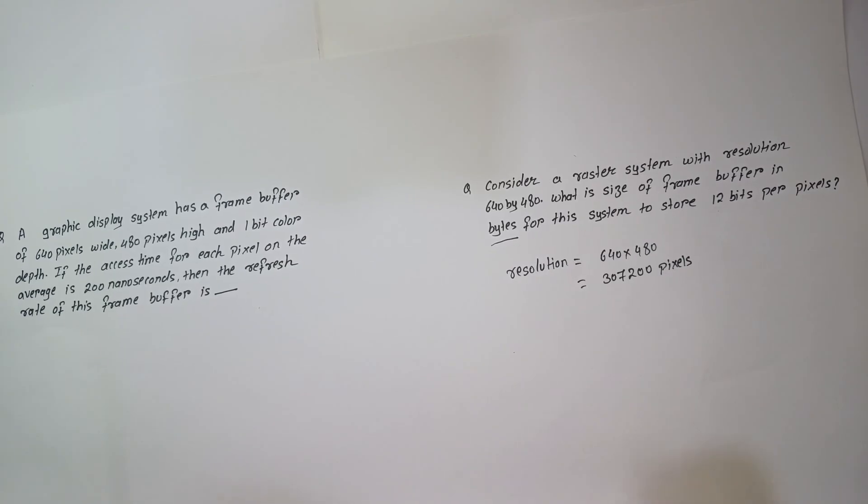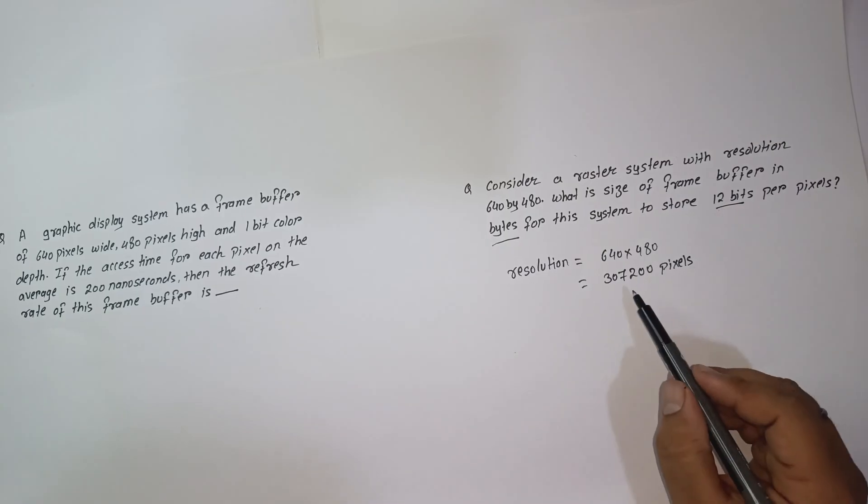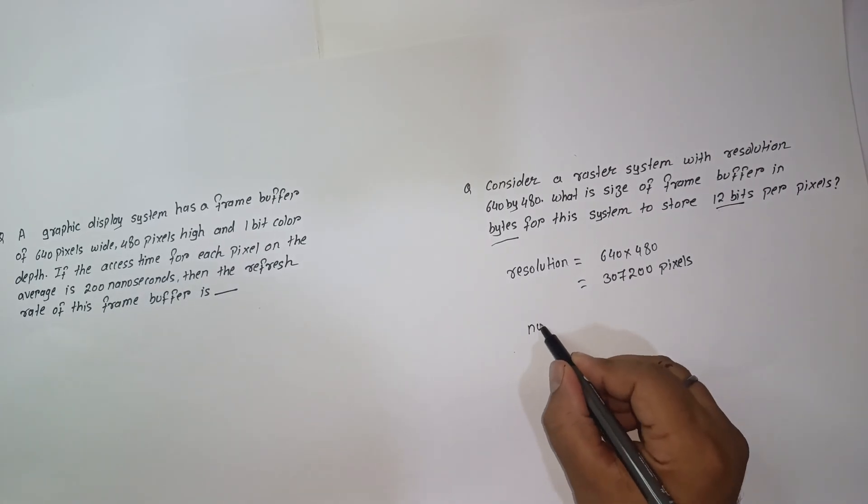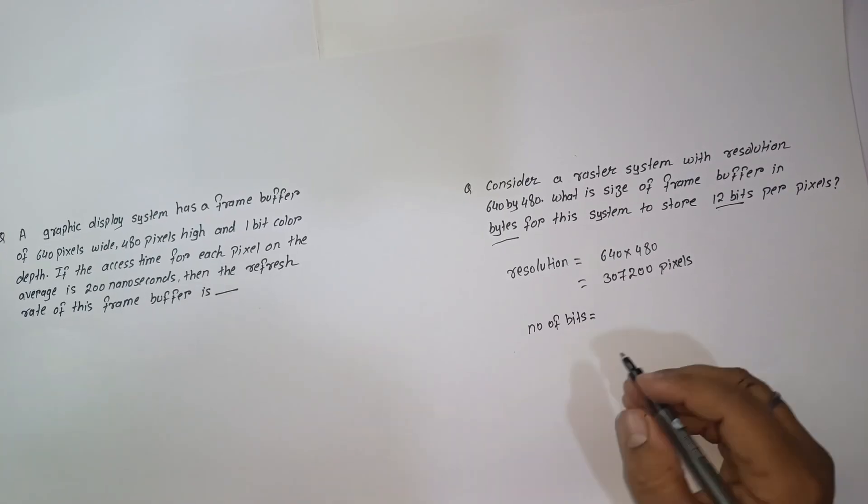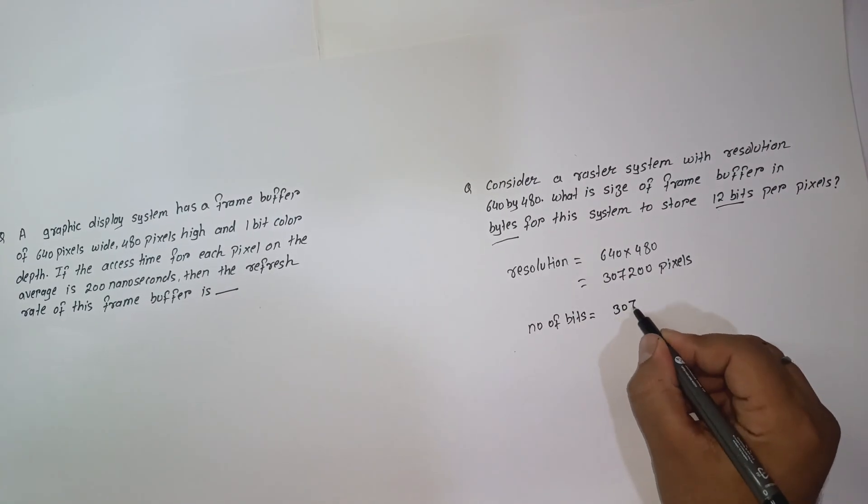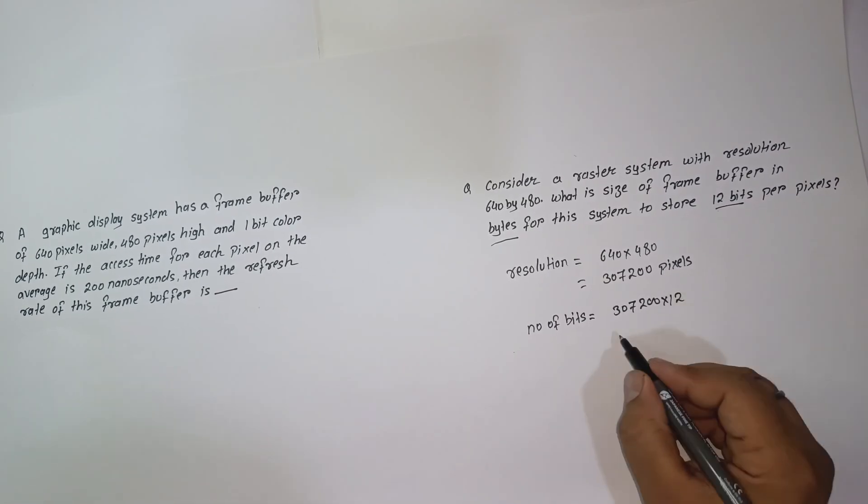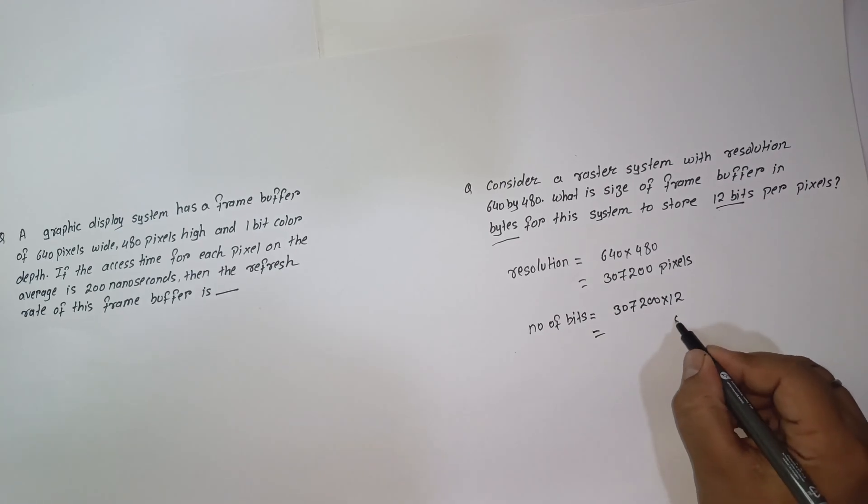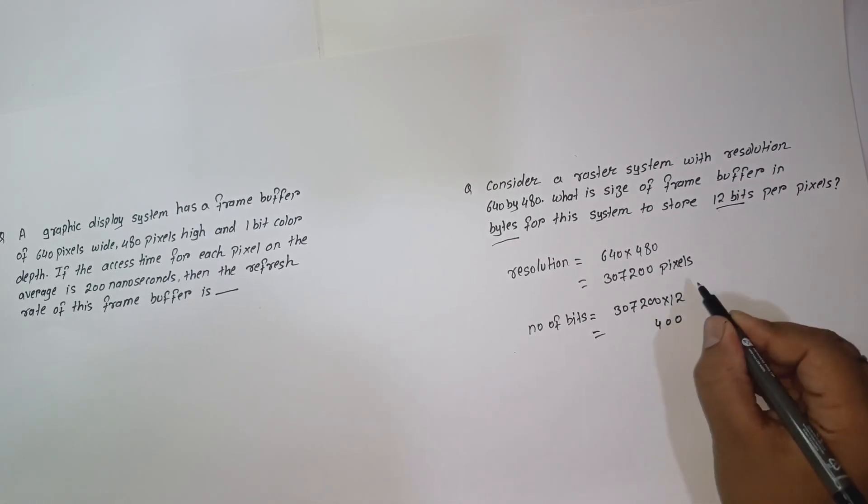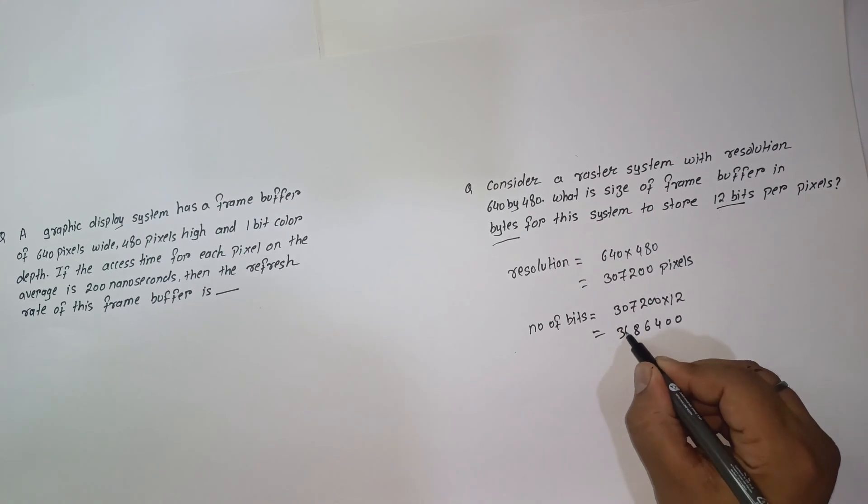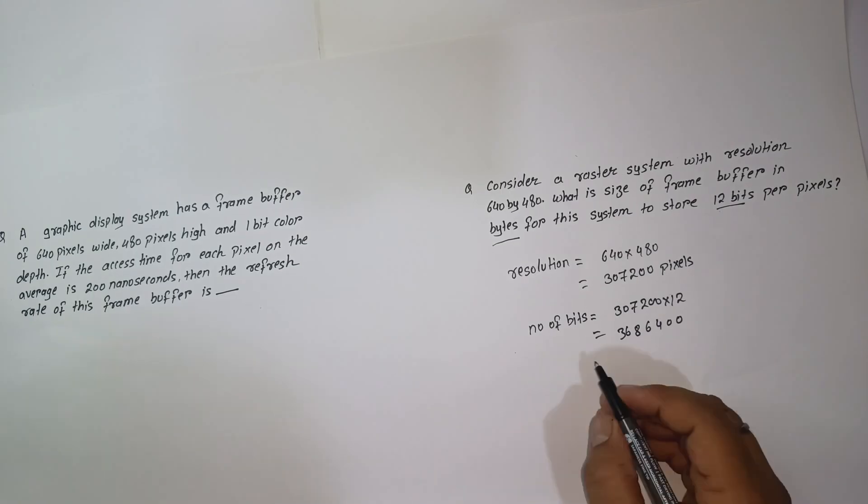Now to store a single pixel, 12 bits are needed. So to store this resolution, number of bits required is 307,200 into 12. So this many number of bits. So the size of frame buffer in bits is this.